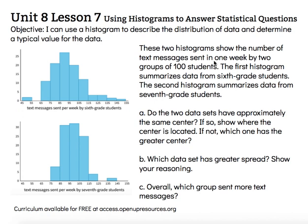These two histograms show the number of text messages sent in one week by two groups of 100 students. The first, or top, histogram summarizes data from 6th grade students. The second, or bottom, histogram summarizes data from 7th grade students.